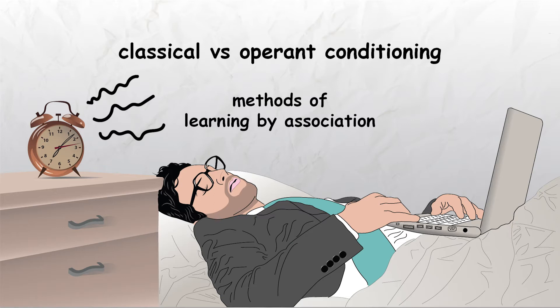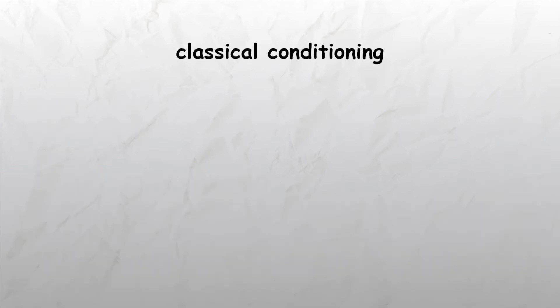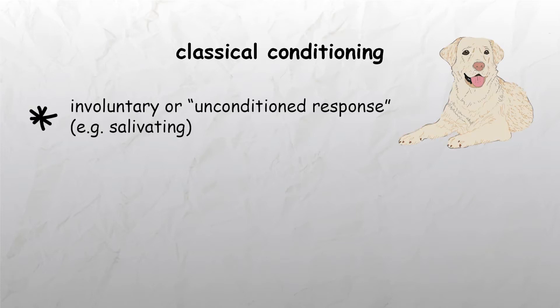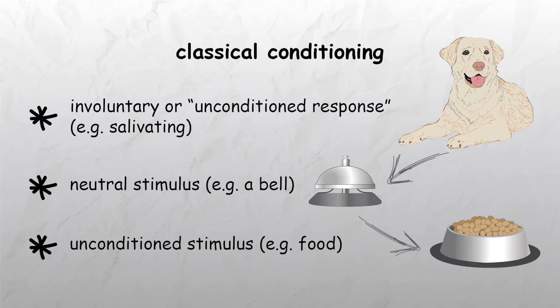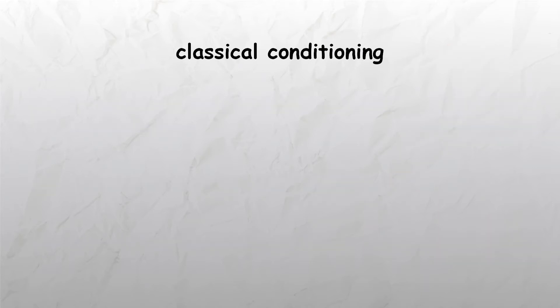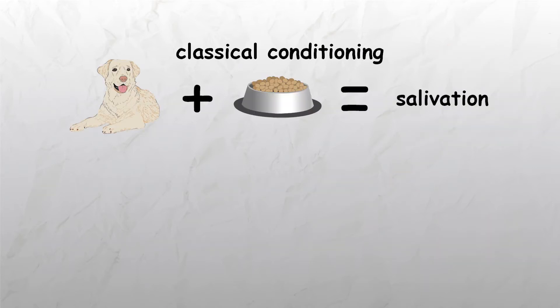However, the two methods have a number of distinct differences from one another. Classical conditioning involves making a person or animal manifest an involuntary or unconditioned response — for example, salivating — on the presentation of a neutral stimulus, for example a bell, by associating the neutral stimulus with an unconditioned stimulus, for example food.